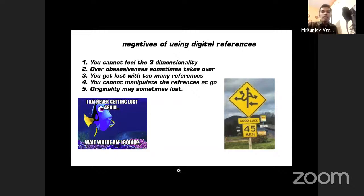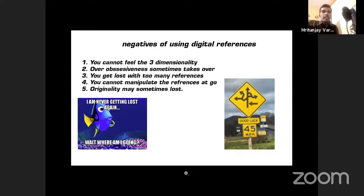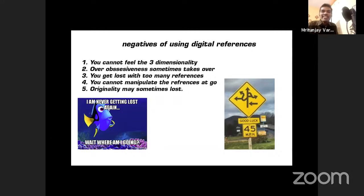You can manipulate a live reference — tell a model to move slightly. With digital you cannot. And originality may sometimes be lost. Michelangelo was a sculptor and architect, always thinking in three-dimensional space, which is why drawing from life was essential for him. There's also an infinite pool of inspiration in real life. Ian McKeague apparently said that once he started drawing directly from reality, he never had an art block again — because there's always so much inspiration and excitement to be found in real life.